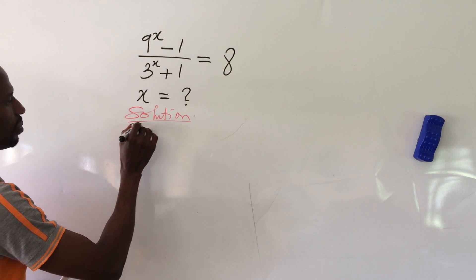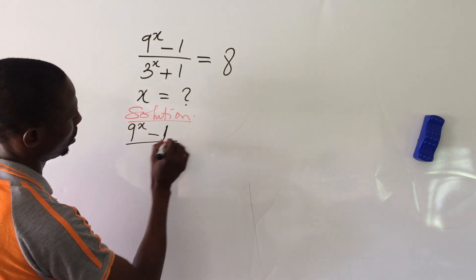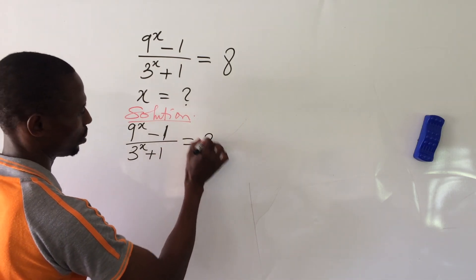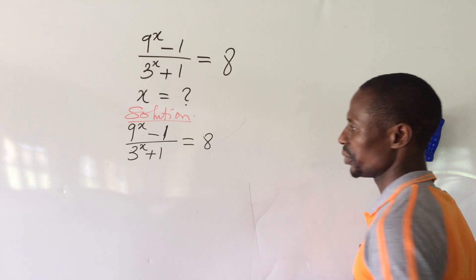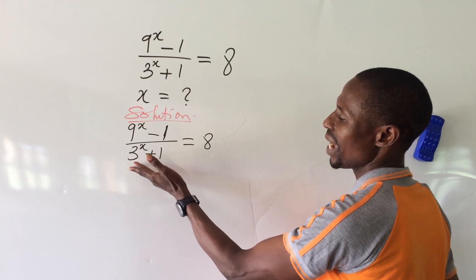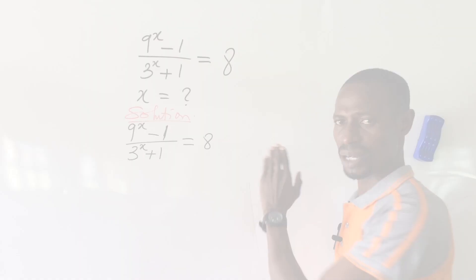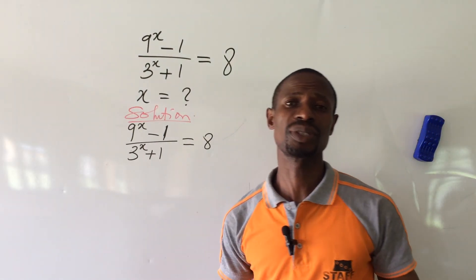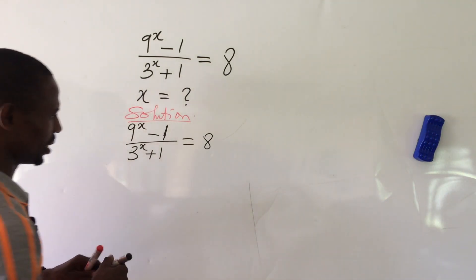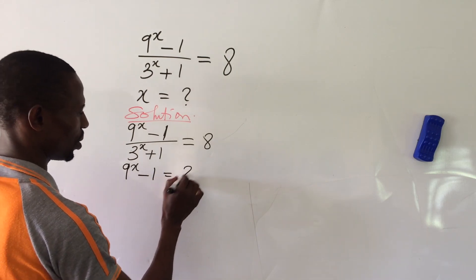The question is: 9 to the power of x minus 1, all over 3 to the power of x plus 1, equals 8. The first thing we do is multiply both sides of the equation by the denominator, which is 3 to the power of x plus 1. According to the law of equations, whatever you do to one side you must do to the other. This gives us: 9 to the power of x minus 1 equal to 8 times 3 to the power of x plus 1.